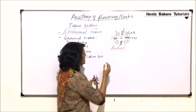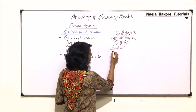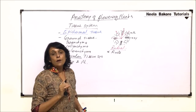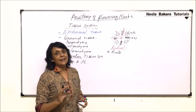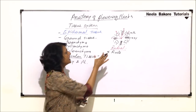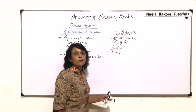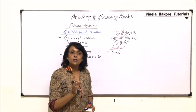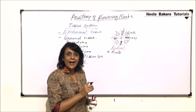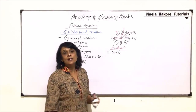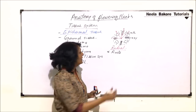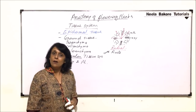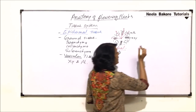Such an arrangement is known as radial arrangement of vascular tissue, and radial arrangement is a characteristic feature of roots. So in roots we would always find radial arrangement — that means if xylem and phloem bundles are alternating with each other and present at different radii, that is radial arrangement, characteristic of roots whether it is a dicot root or monocot root.